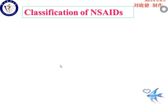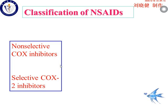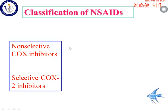Welcome back. Let's go on to study the drug classification. Non-steroidal anti-inflammatory drugs can be broadly divided into two groups: non-selective COX inhibitors and the selective COX-2 inhibitors.